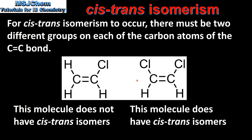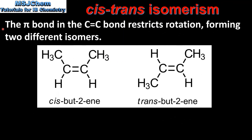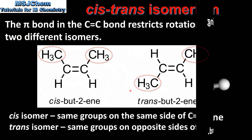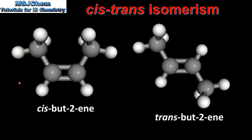Next we look at how to distinguish between cis-trans isomers. The pi bond in the carbon to carbon double bond restricts rotation, forming two different isomers. Here we can see the two isomers of but-2-ene. On the left we have cis-but-2-ene, on the right we have trans-but-2-ene. The cis isomer has the same groups on the same side of the carbon to carbon double bond. The trans isomer has the same groups on opposite sides of the carbon to carbon double bond. Here we can see 3D representations of the two isomers: the cis isomer on the left has the two CH3 groups on the same side, and the trans isomer on the right has the two CH3 groups on opposite sides of the carbon to carbon double bond.